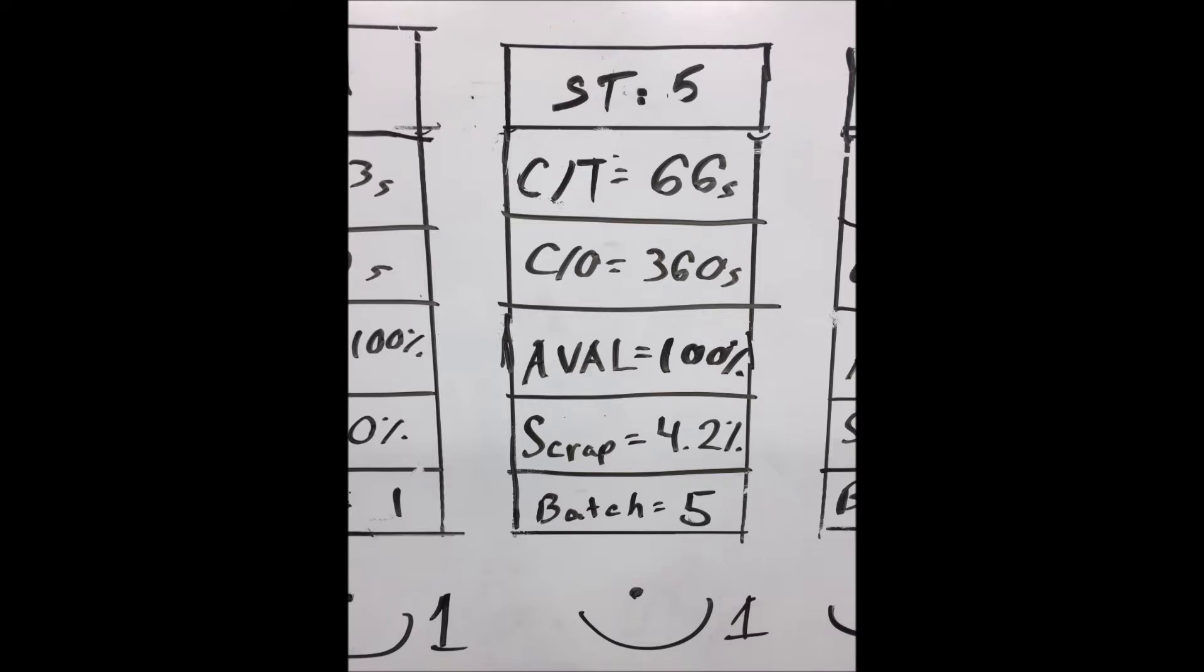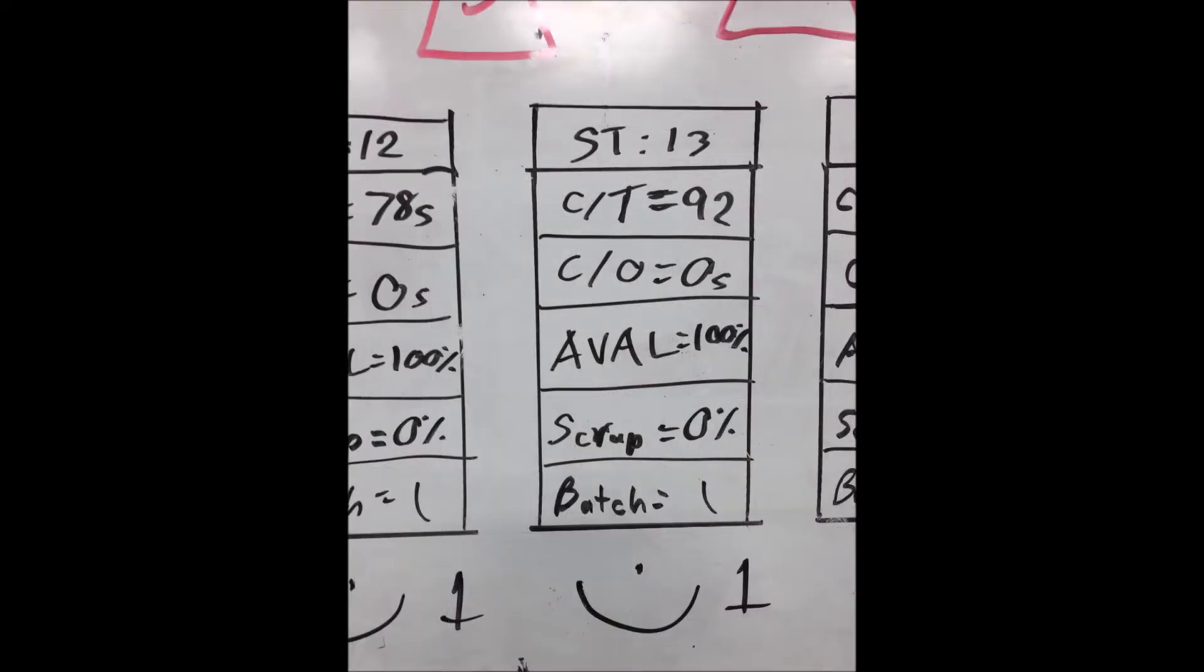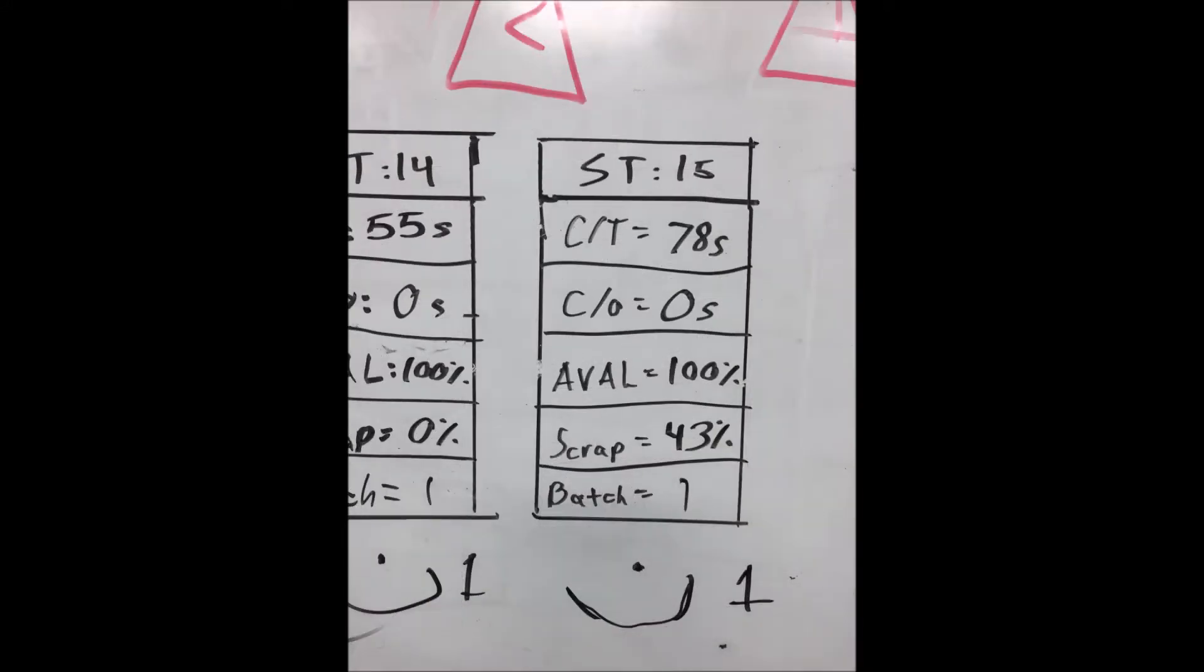In our example, you see that Station 5 has a long changeover time. Station 13 appears to be a bottleneck based on cycle time. And Station 15 has an outrageous scrap or defect rate, likely occurring at final inspection.